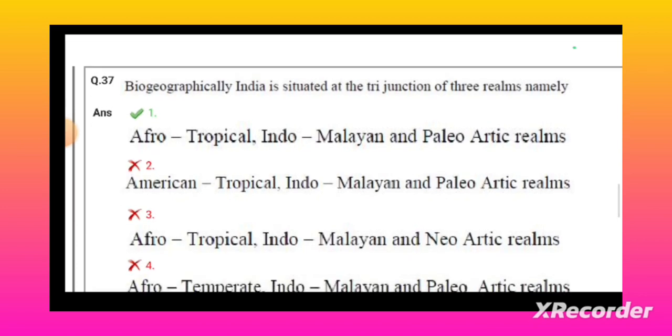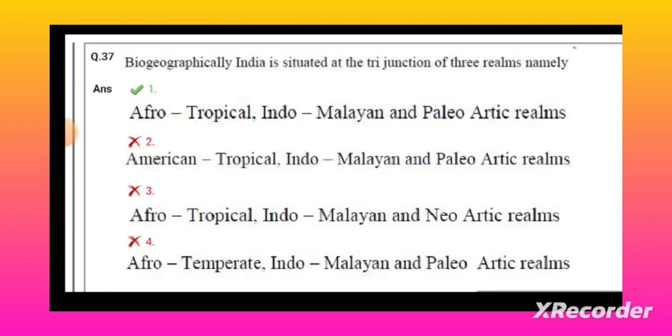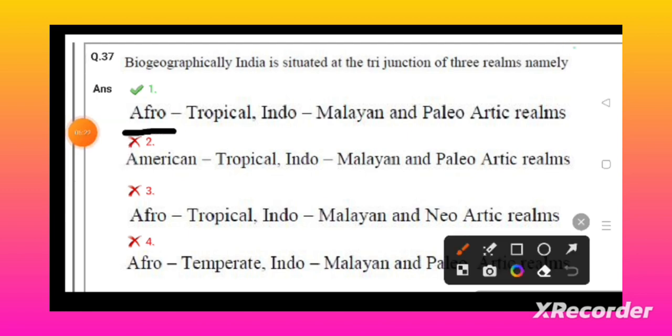Biogeographically, India is situated in the tri-junction of three realms, namely Afrotropical, Indo-Malayan, and Palearctic realms.